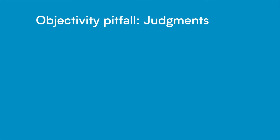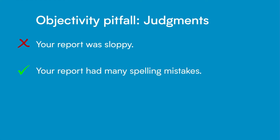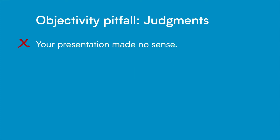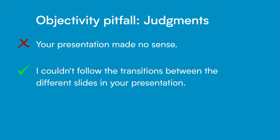Here are some examples of judgments and their more objective replacements. Saying something was poorly done does not help someone know what needs to be improved. So instead of saying 'your report was sloppy,' you could say 'your report had many spelling mistakes.' Instead of saying 'your presentation made no sense,' you could say 'I couldn't follow the transitions between the different slides in your presentation.'